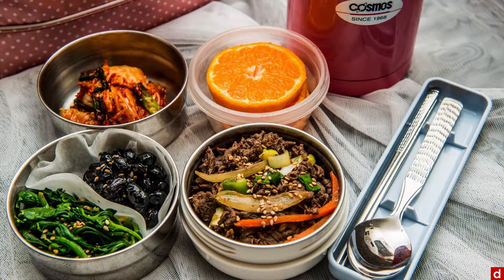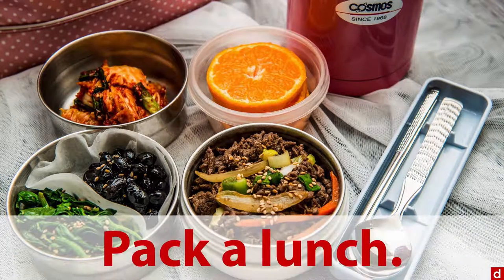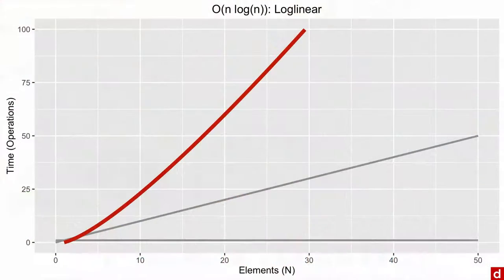Then we have the functions where I say, you know, you better just pack a lunch, because it's going to take a little while. The best example of this is what's called log linear, that's where you take the number of items, and you multiply that number times the log of the items. And an example of this is something called a fast Fourier transform, which is used for dealing for instance, with sound or anything that's over time.